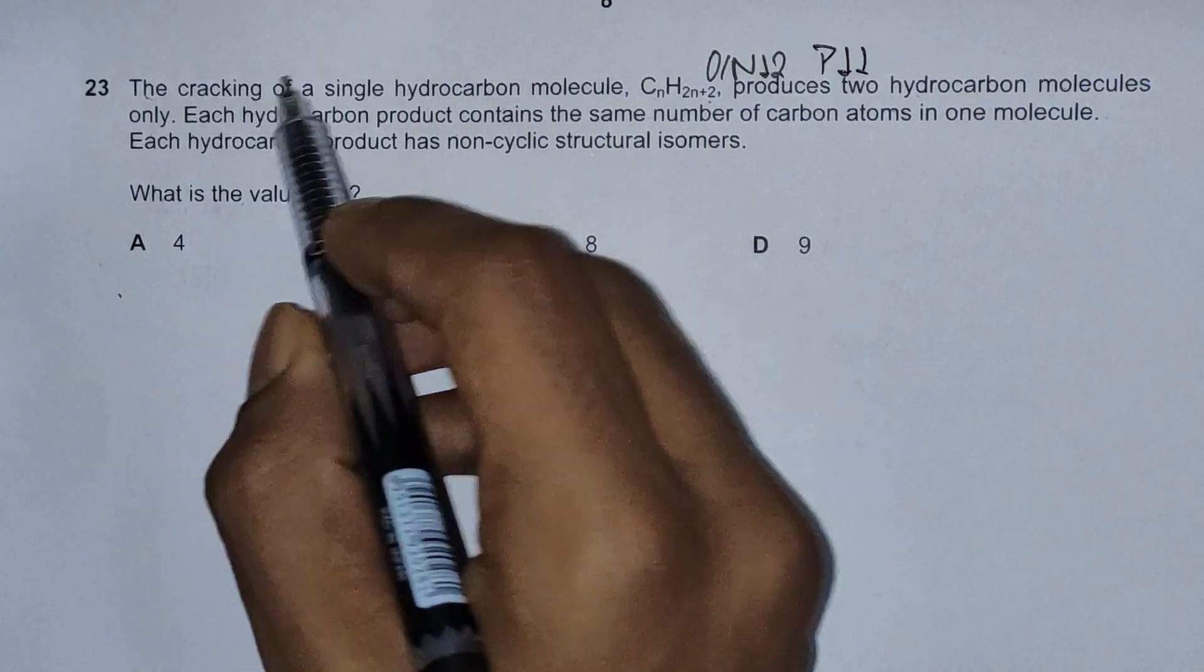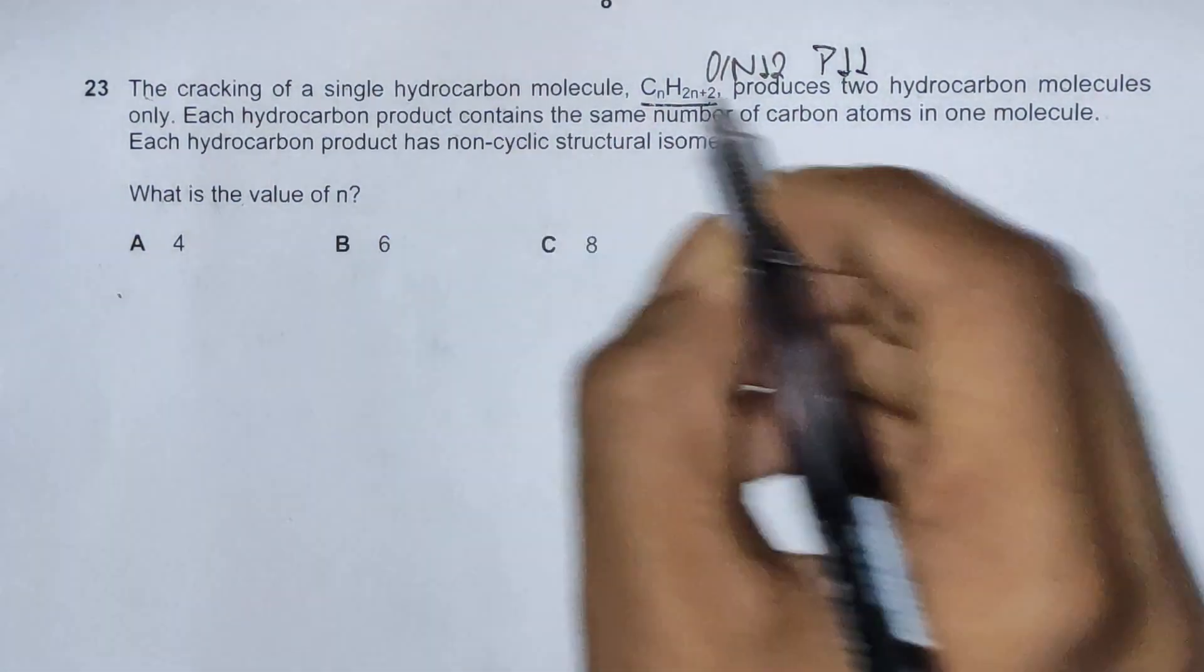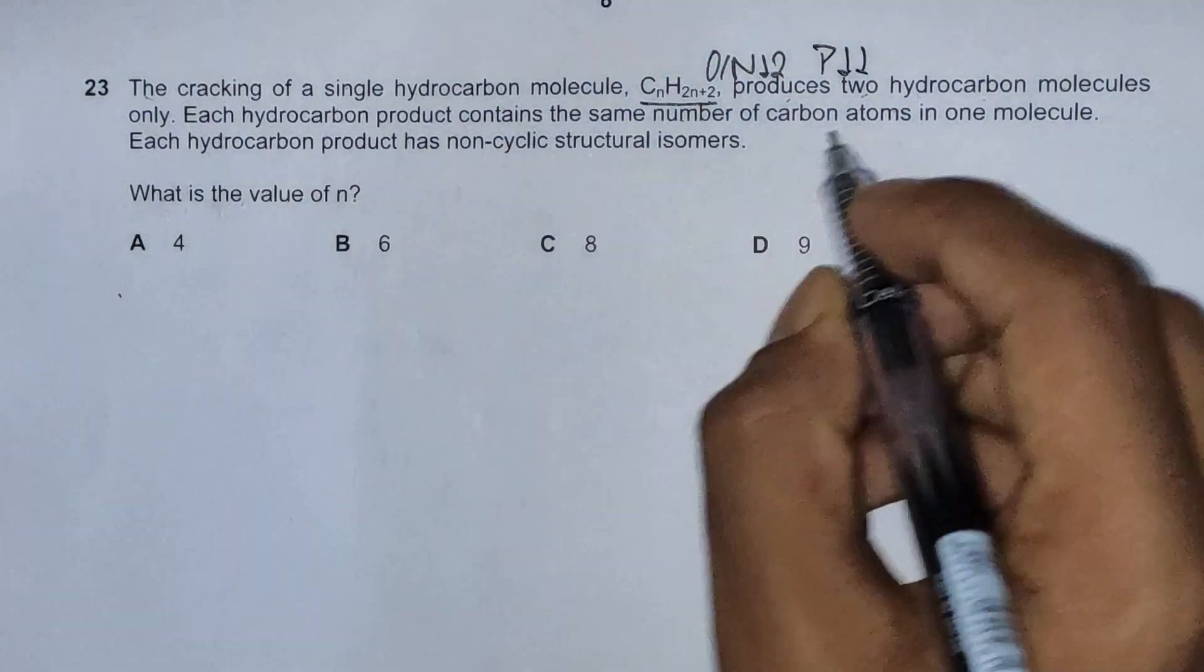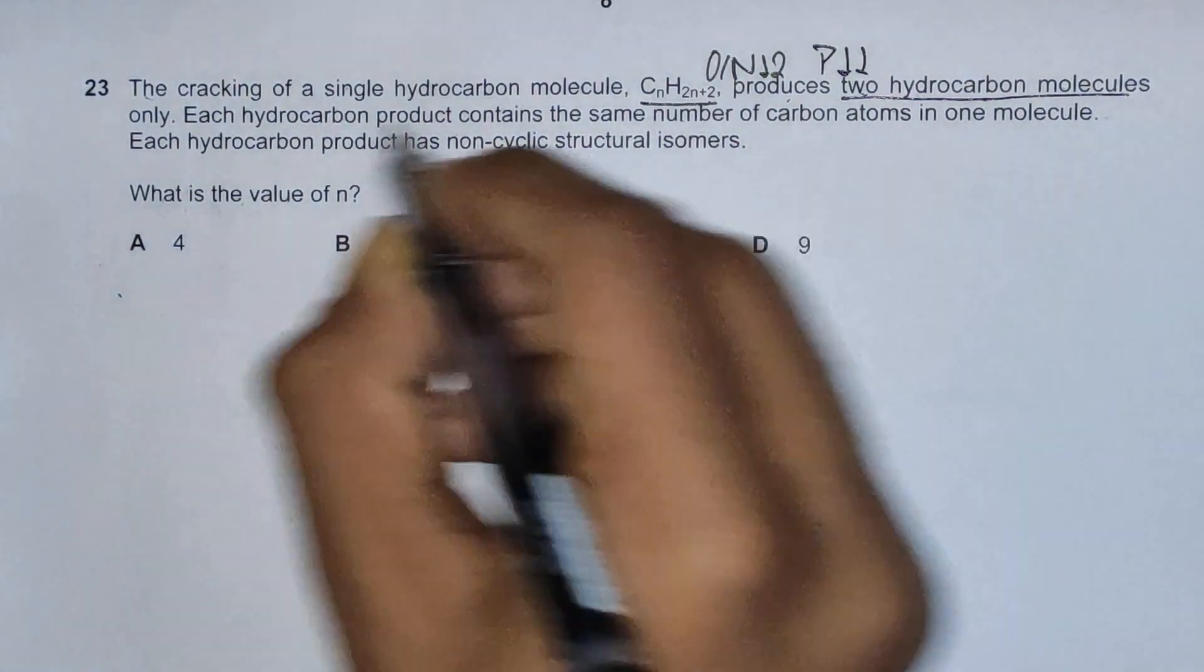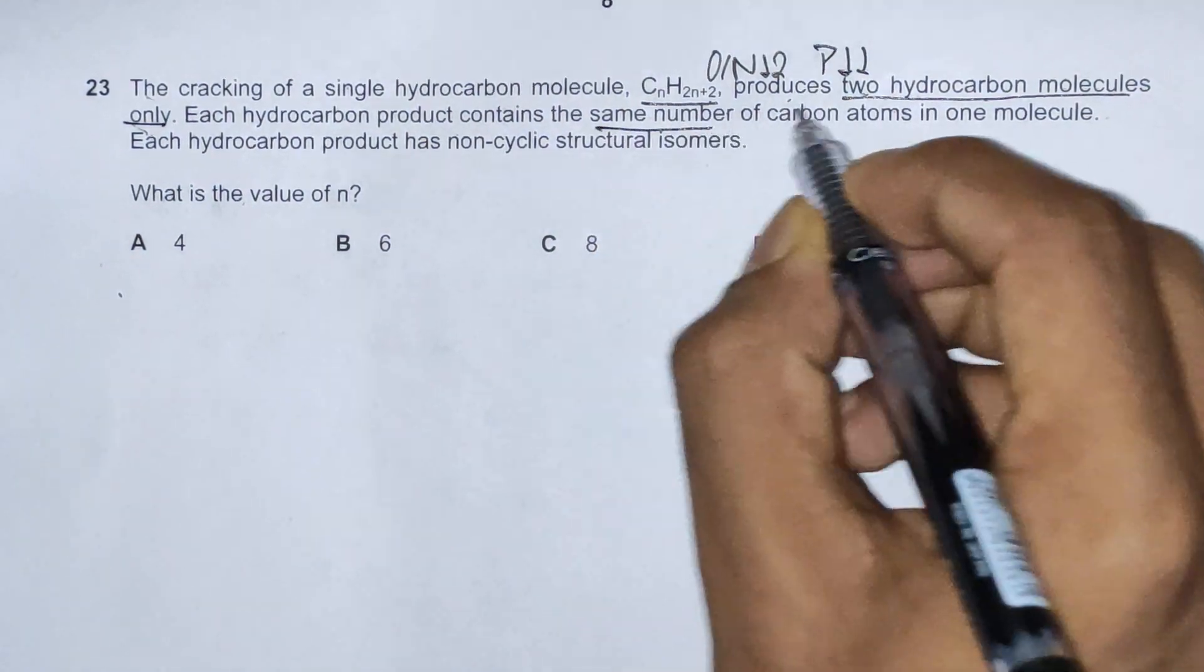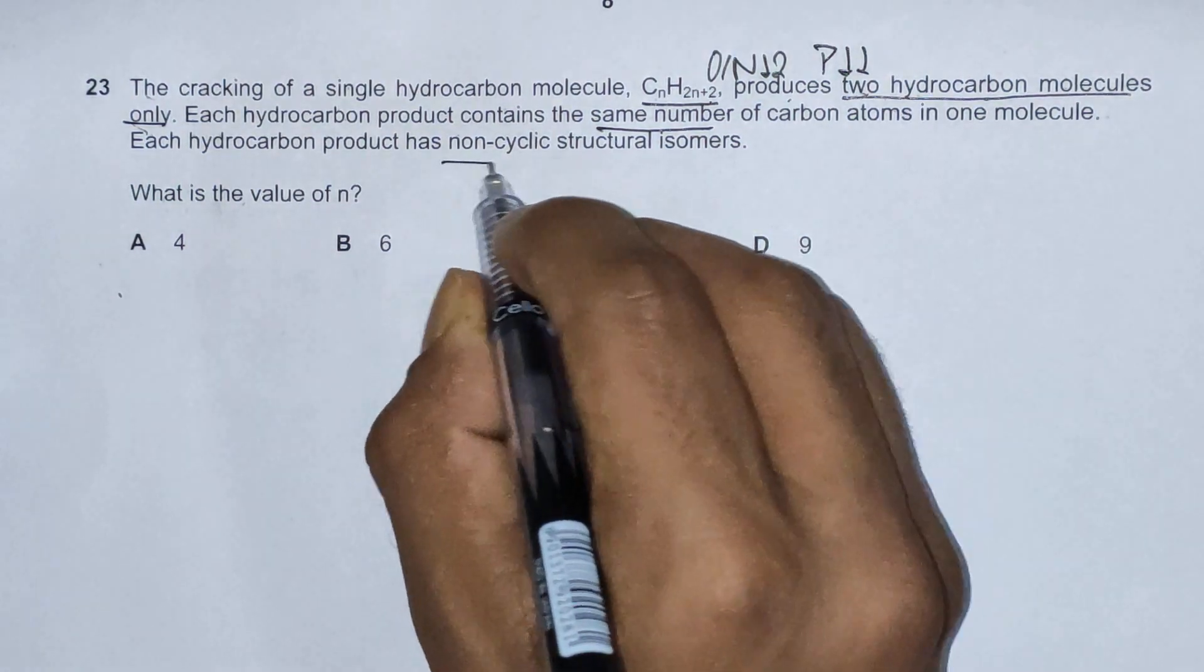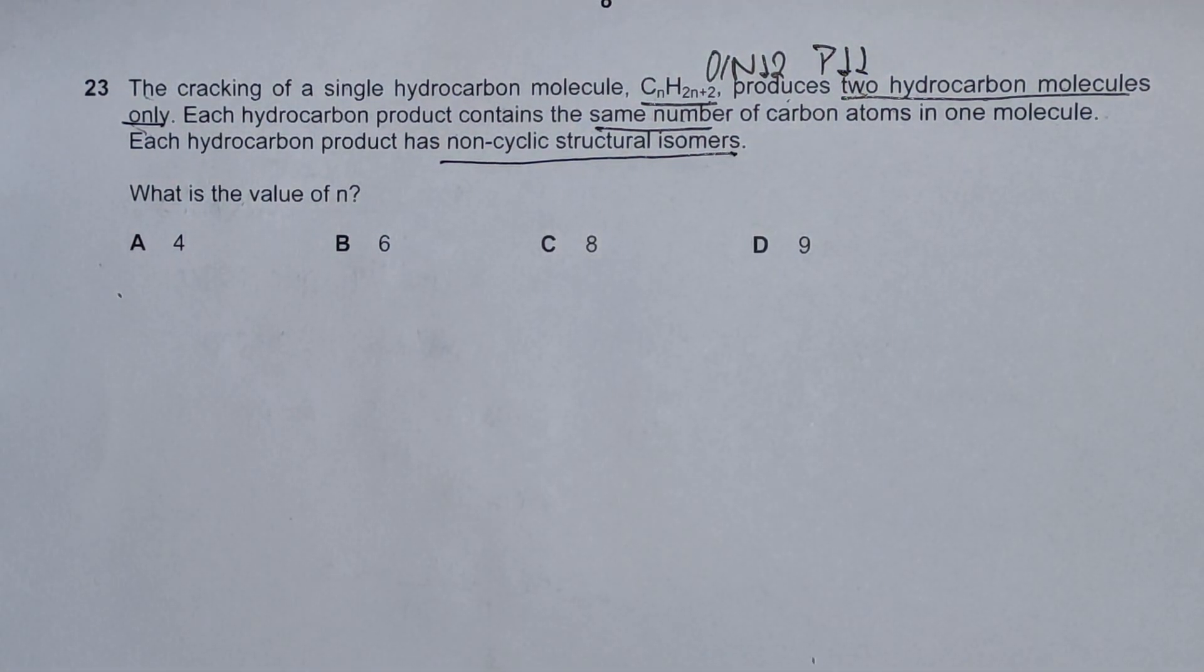The question reads: the cracking of a single hydrocarbon molecule CNH2N+2 produces two hydrocarbon molecules only. Each hydrocarbon product contains the same number of carbon atoms in one molecule. Each hydrocarbon product has non-cyclic structural isomers. What is the value of N?